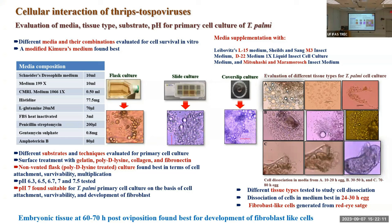We then tested eggs at the 70–80% developmental stage, generally called 'red eye stage' because a red dot corresponding to the insect's developing eye becomes visible. When we picked these red-eye stage eggs and implanted them in media, we could see the generation of fibroblast-like cells. We proceeded with 70–80% stage eggs to develop our primary culture.